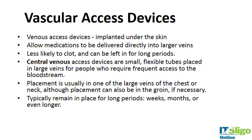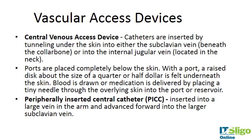Placement is usually in one of the large veins of the chest or the neck, but it can be in the groin if necessary, and they can remain in place for weeks, months, or even longer. These central venous access device catheters are inserted by tunneling under the skin into either the subclavian vein beneath the collarbone or into the internal jugular vein in the neck. A port is then placed below the skin — you can feel a disc about the size of a US quarter, roughly the size of a two-pence piece.